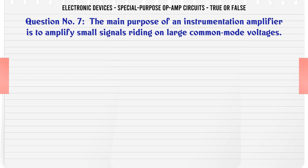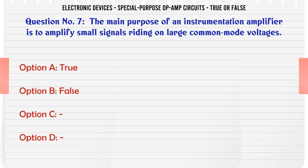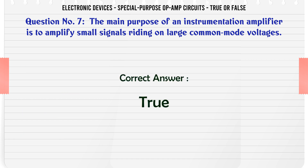The main purpose of an instrumentation amplifier is to amplify small signals riding on large common mode voltages. A. True. B. False. C. D. The correct answer is True.